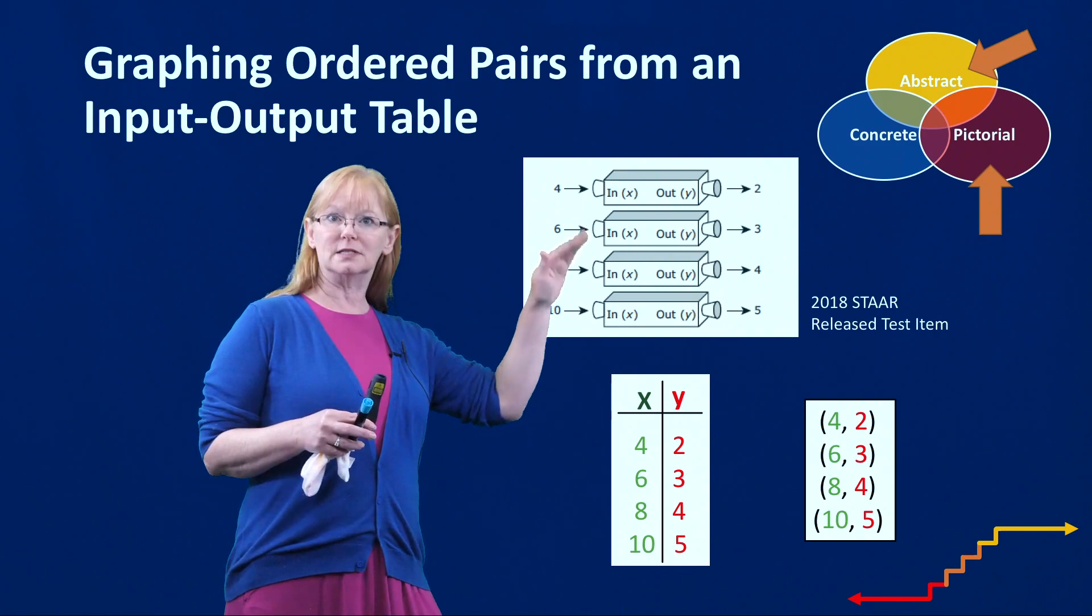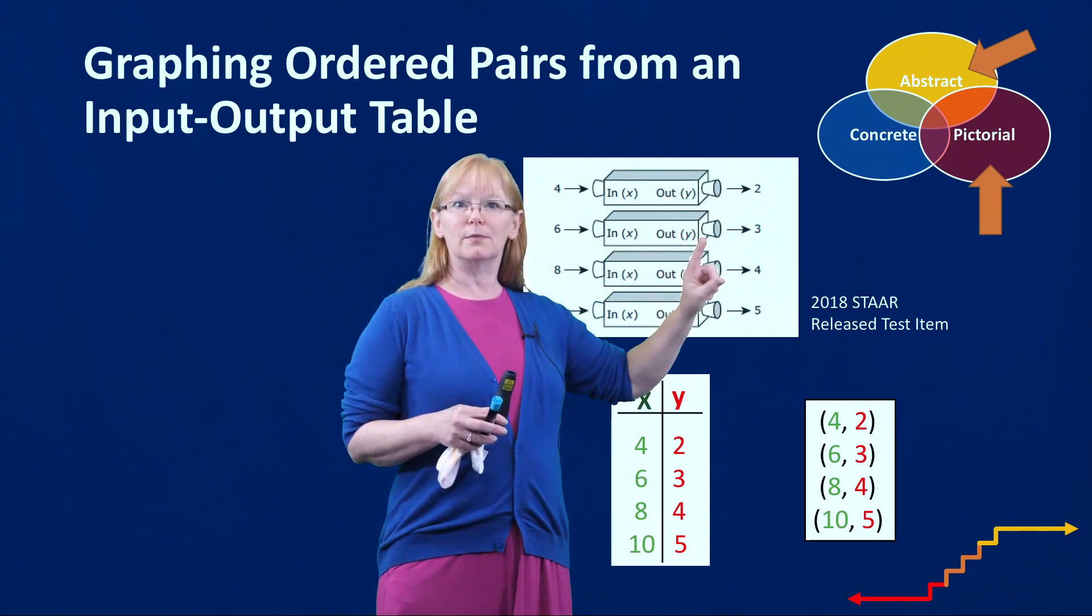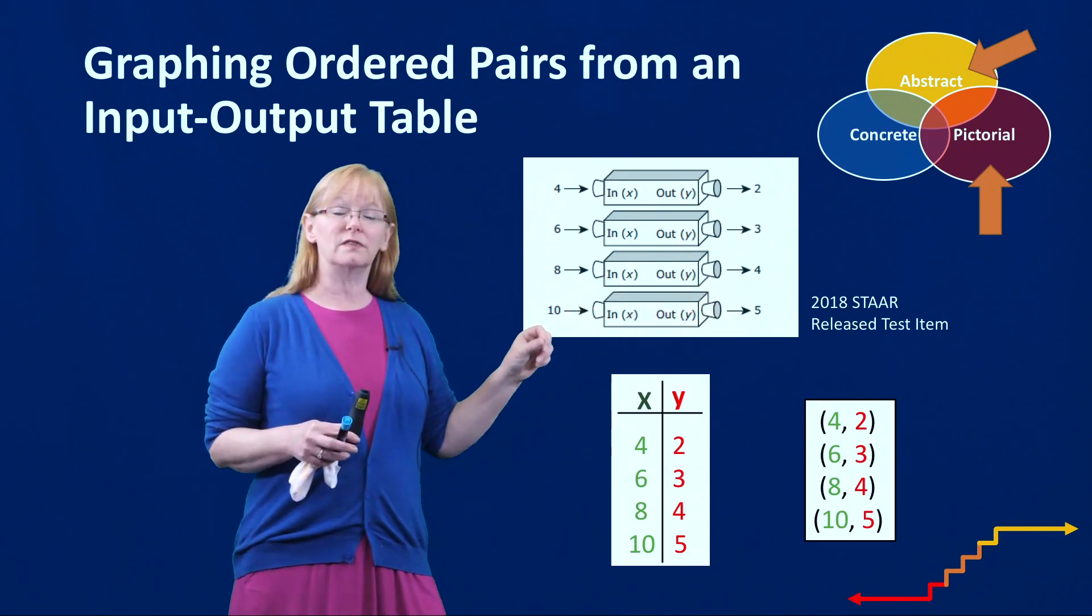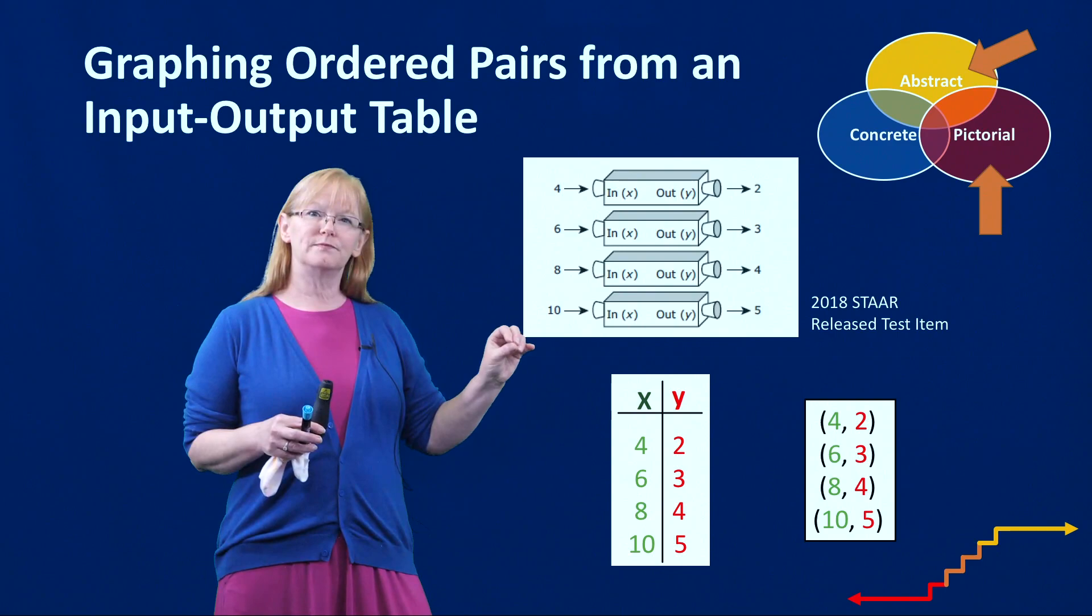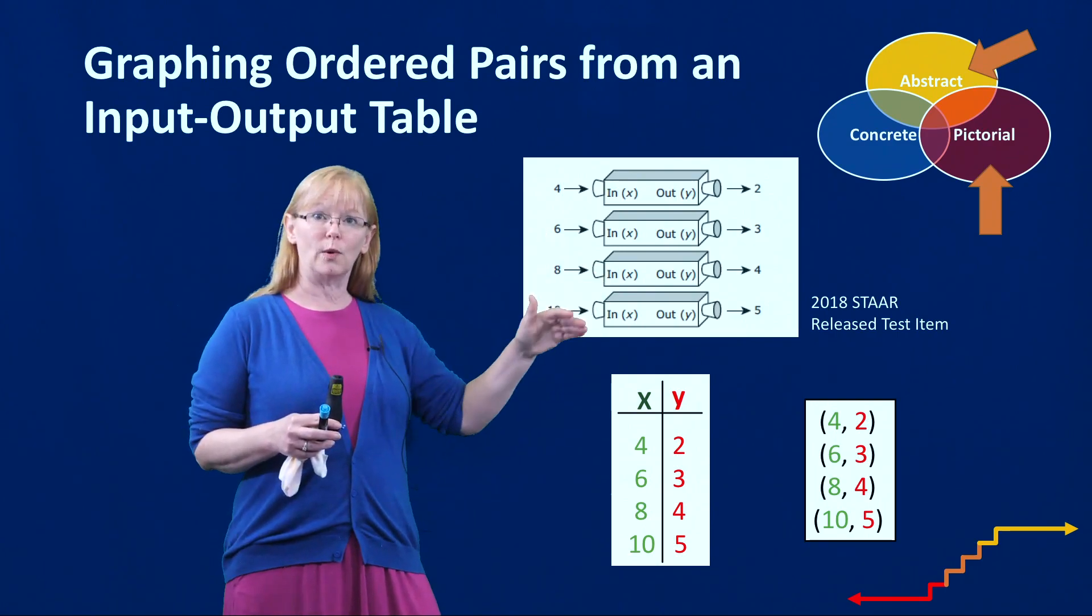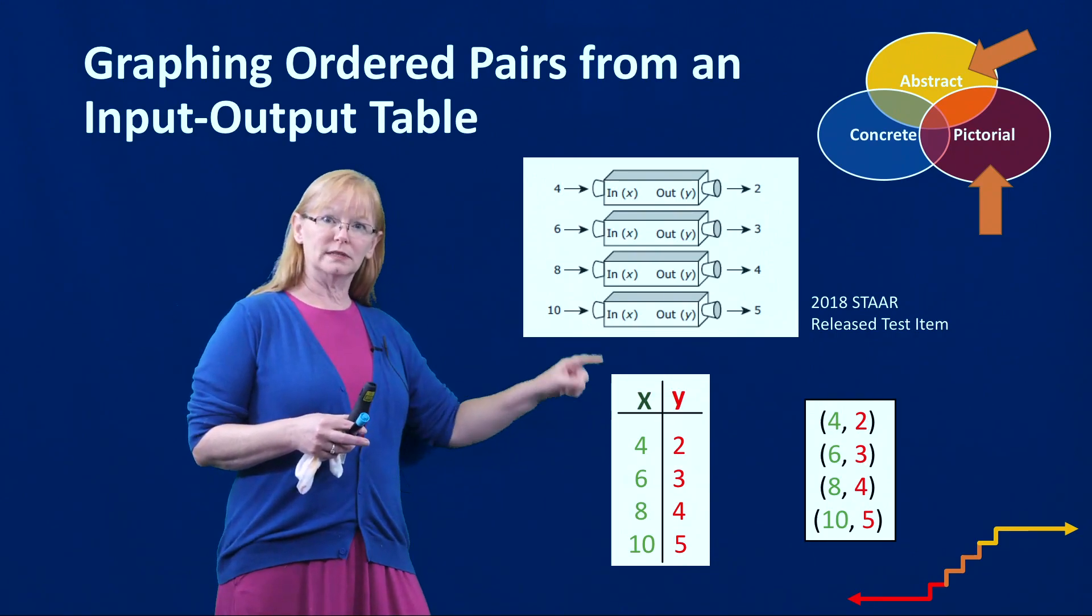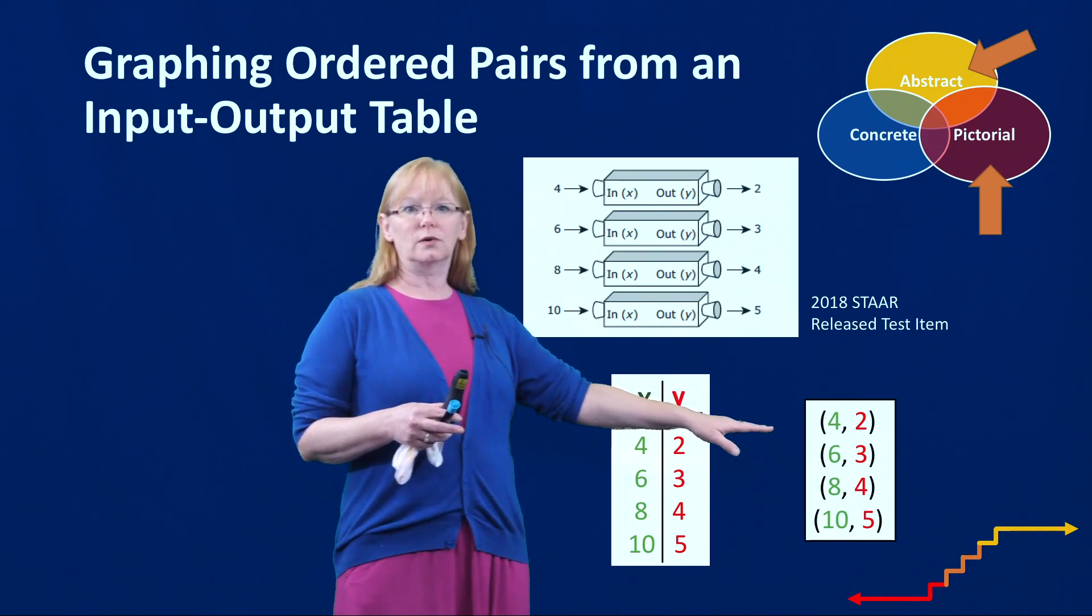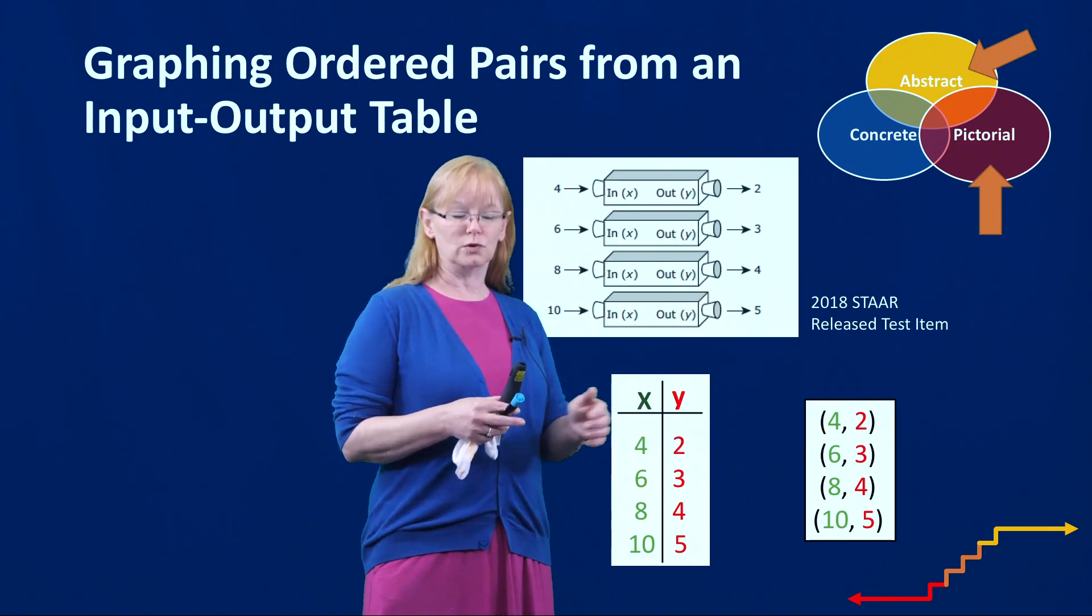I think Henry has this machine and he puts in numbers and then he gets different numbers out because the machine follows a rule and the kids had to determine how to graph these points. So we're going to look at doing an input-output table, this little t-chart, and we're also going to look at the notation of how we write those ordered pairs.